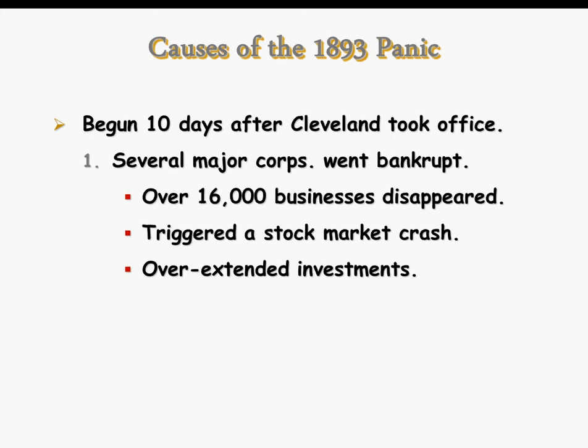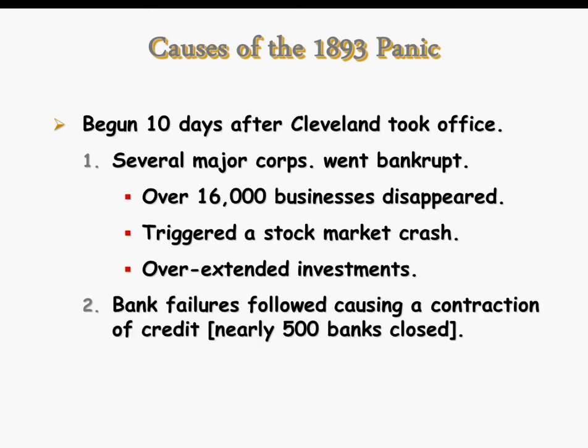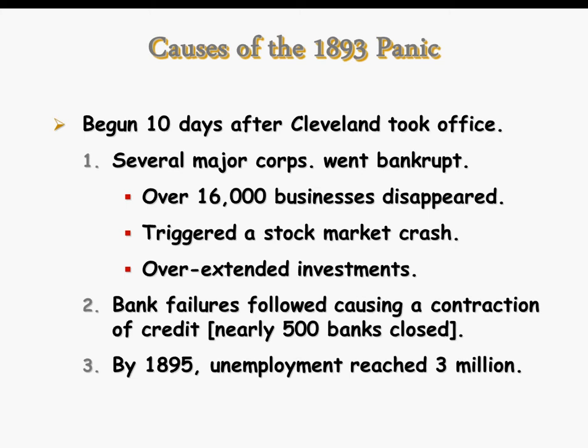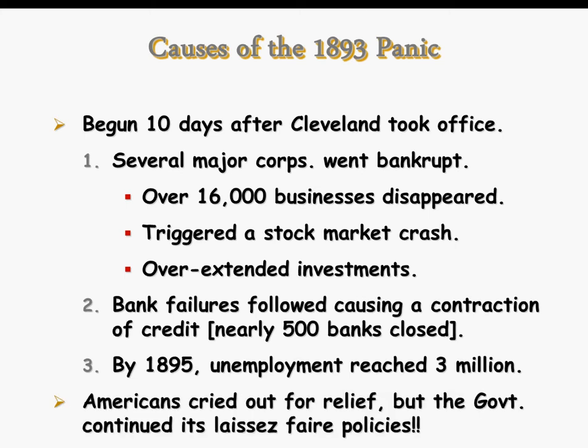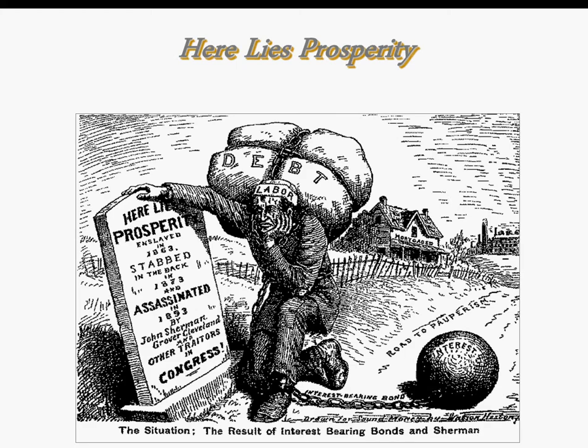16,000 businesses will disappear. Farmers will have their farms foreclosed. The stock market is going to take a crash. 500 banks are going to go away, and depositors won't get their money back. In 1895, the unemployment rate was 3 million people. Some Americans called out for relief from the government, but because of a laissez-faire attitude, the federal government did nothing to alleviate the poor.